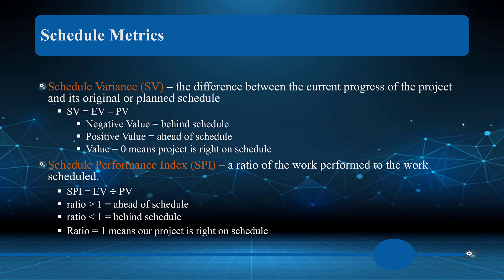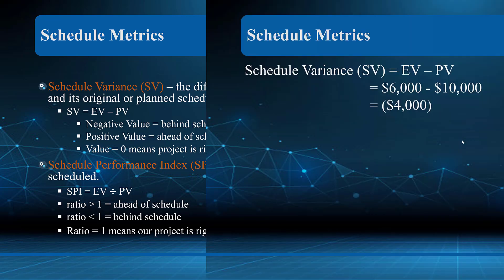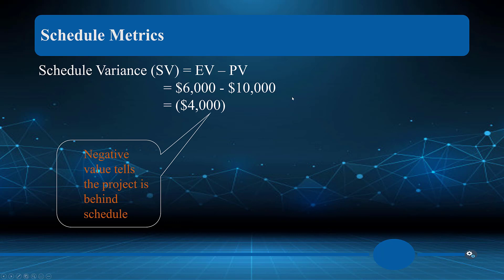Schedule variance is the difference between the current progress of the project and its original or planned schedule. It's EV minus planned value: a negative means we're behind schedule, a positive means we're ahead, and zero means we're right on schedule. We can use that index to assess where we'll end up if we continue on that trajectory.